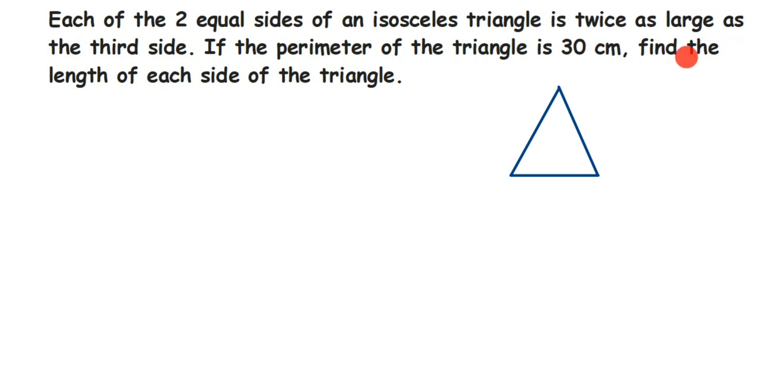find the length of each side of the triangle. Now they are talking about the isosceles triangle. The isosceles triangle is the one where two sides will be equal. Now suppose these two sides are equal.